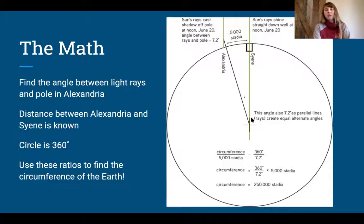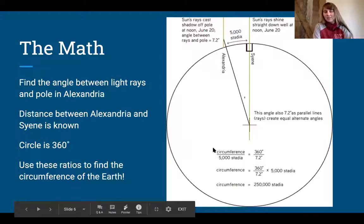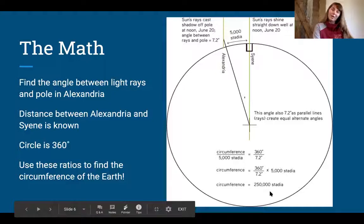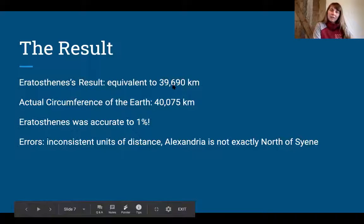We can use ratios to calculate the circumference of the Earth because we have two angles and a length, and we can find the other length. We have the circumference on one side and 5,000 stadia on the other. Using cross multiplication, we can find that the circumference of the Earth is around 250,000 stadia, which is approximately 39,690 kilometers.